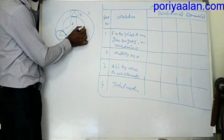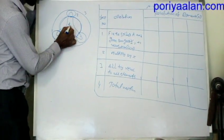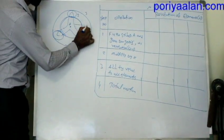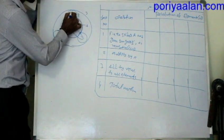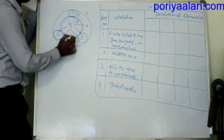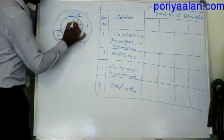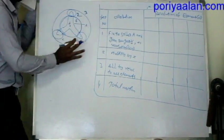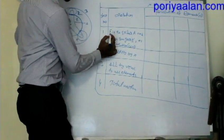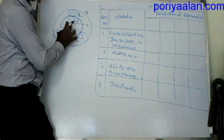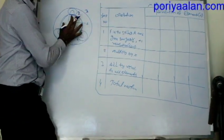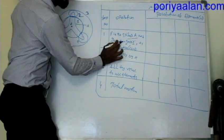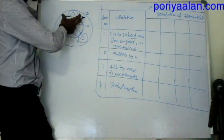An epicyclic gear train has a sun gear at the center. In the sun gear, there is a spider fixed — the name is Spider A. The sun gear is gear 1. Then there are 3 planet gears of equal diameter — the name is gear 2. Then the annular gear is gear 3. Looking at the table: first, fix the spider. This is a spider-fix assumption. I will fill in the given condition. Give sun gear 1 a plus 1 revolution — that is counterclockwise.